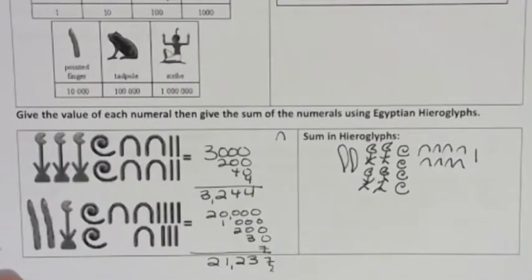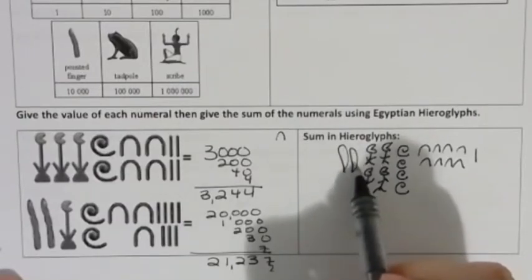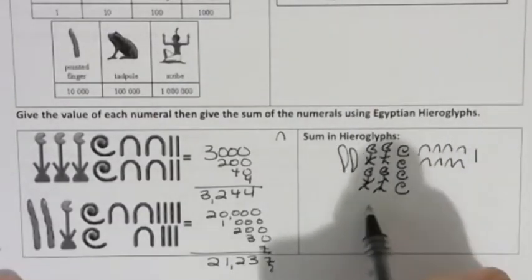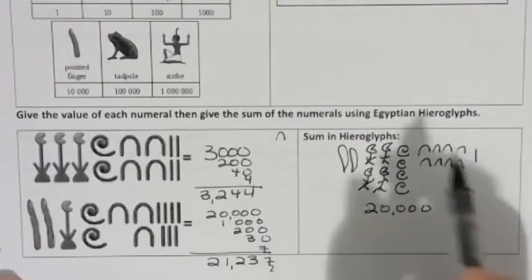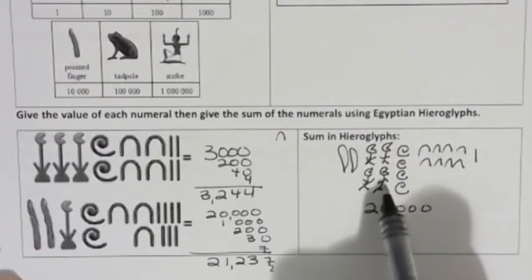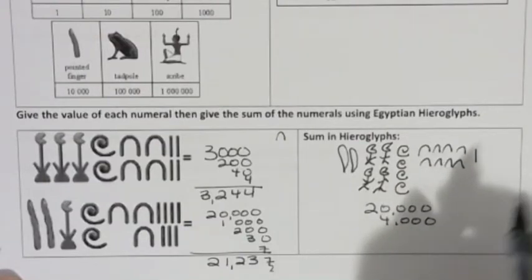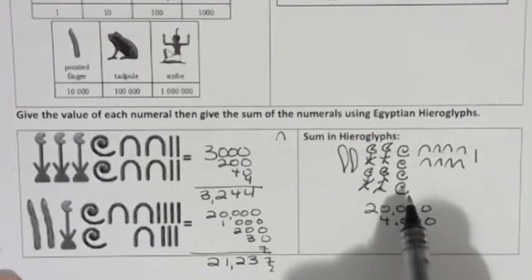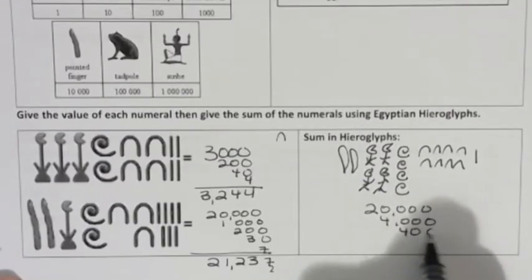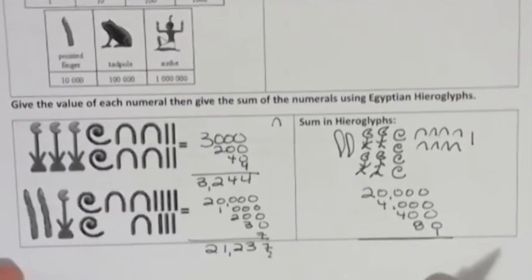And then two pointed fingers. And I think in the next frame, it asks you to say, what is that in Hindu Arabic? Well, that is two pointed fingers is 20,000. Four lotus flowers is 4,000. Four scroll or coiled ropes is 400. Eight heel bones is 80. And then one stroke.